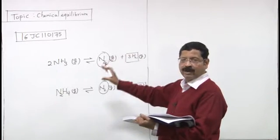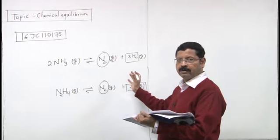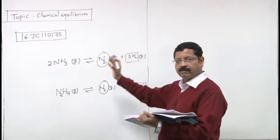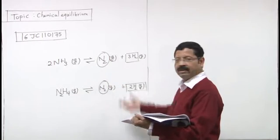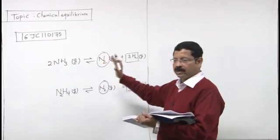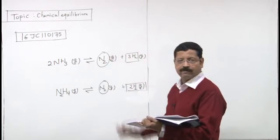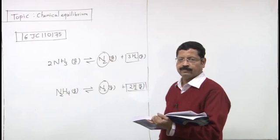Woh unke adjustment ke baad, woh jo data hota hai, woh unka Le Chatelier's principle ke according backward shift hone ke baad wala data us tari se hota hai. Otherwise to directly flat total to nahi hai. Pehle to equilibrium constant same rakhne ke liye Le Chatelier's principle lagega, backward shift hoga. To is sab se yeh x plus y se less hai.